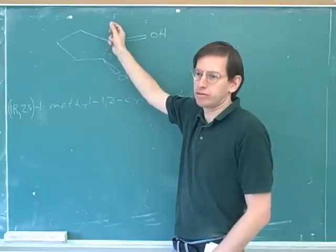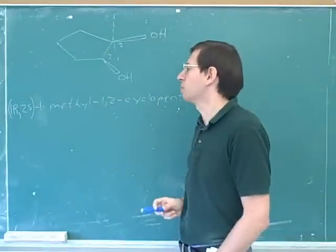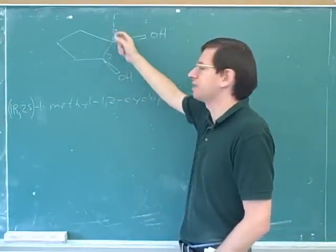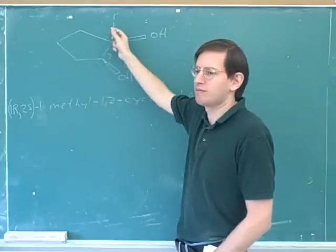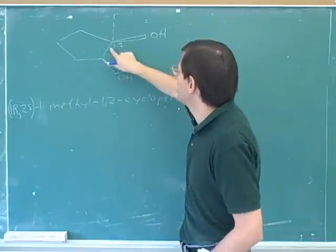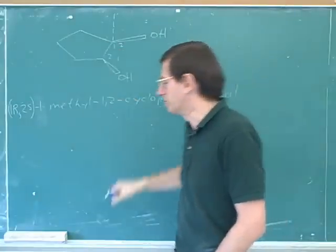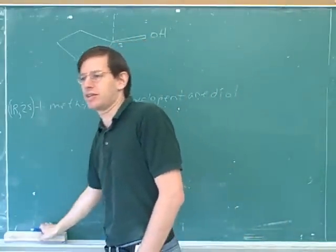Well, now we might as well try to give the methyl group the lowest possible number. It's more important to give alcohols low numbers than methyl groups, but either of these two ways would give the alcohols the same numbers. So now we might as well give the methyl group the lowest number. Well, that would mean calling this the number one. Then the methyl group gets the number one, and that's the way you did it. So that's good.